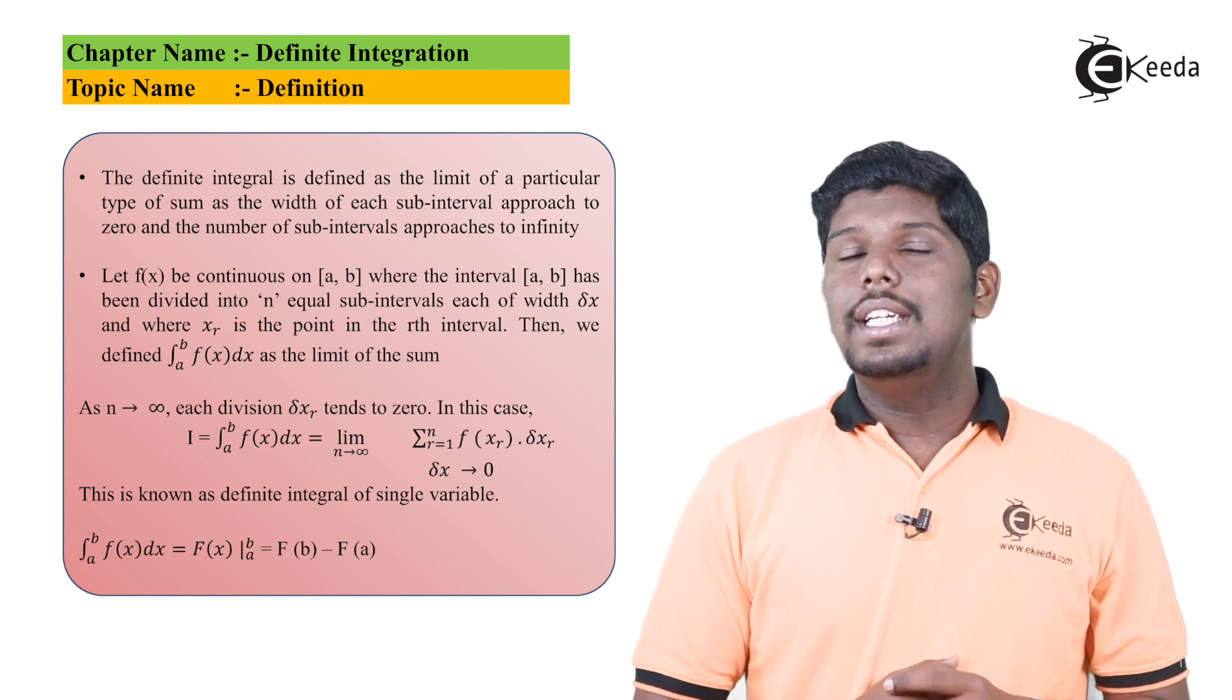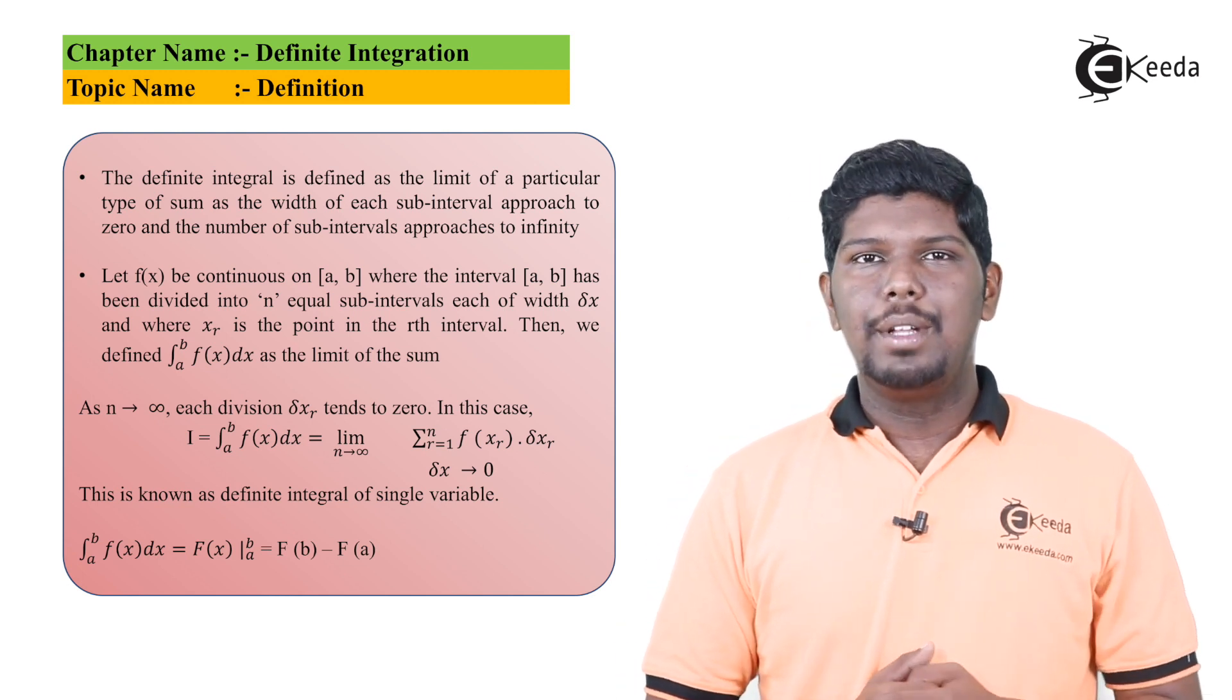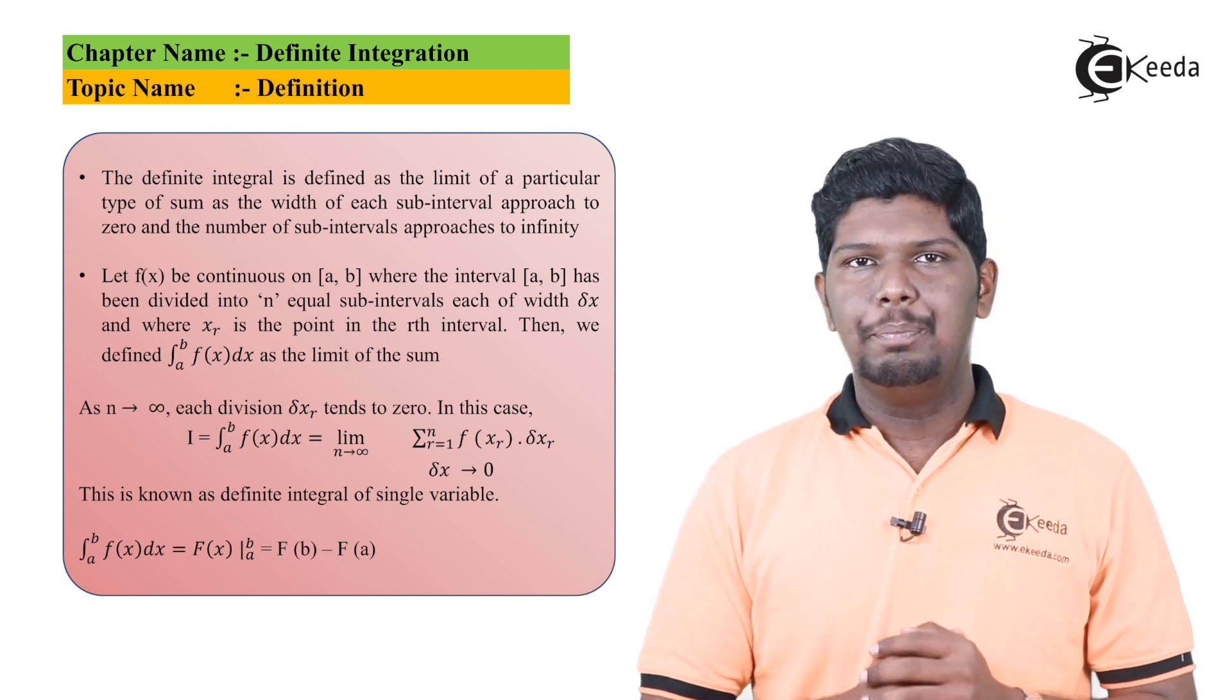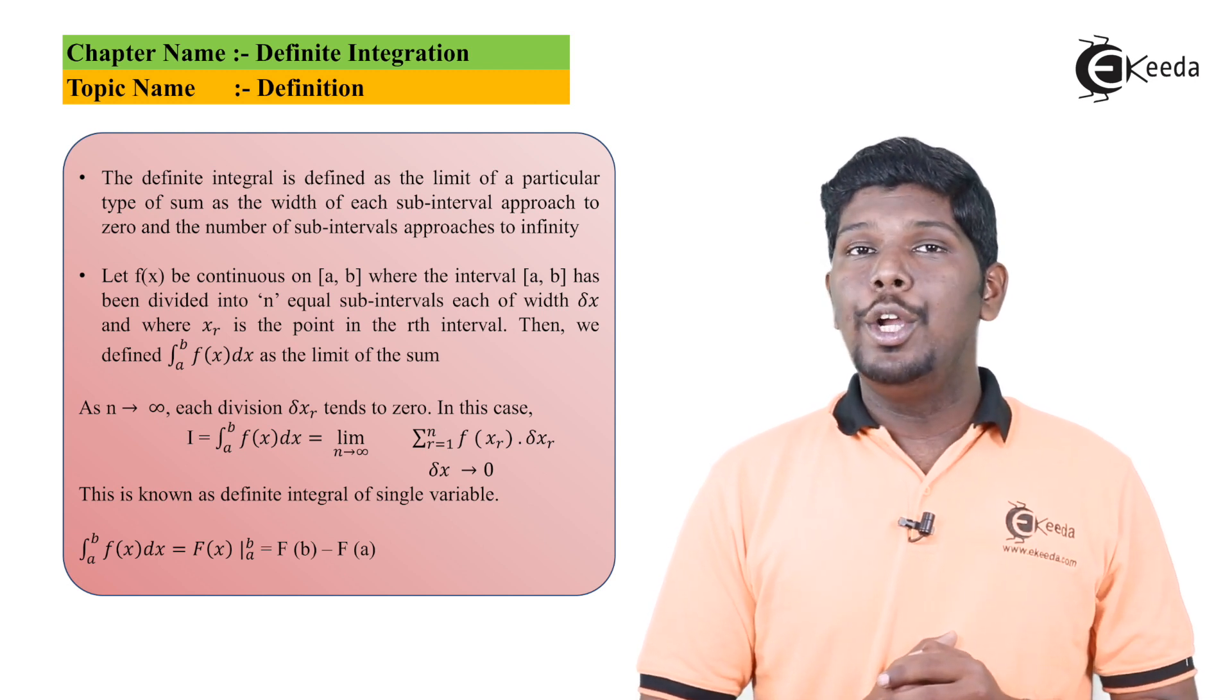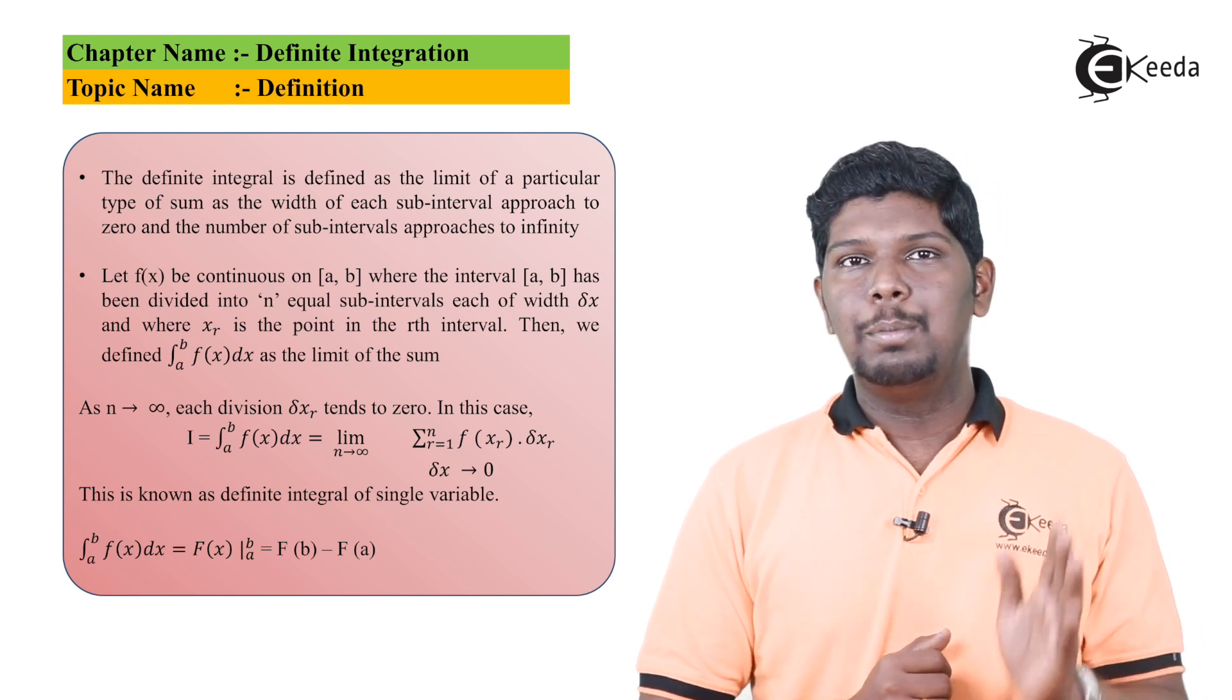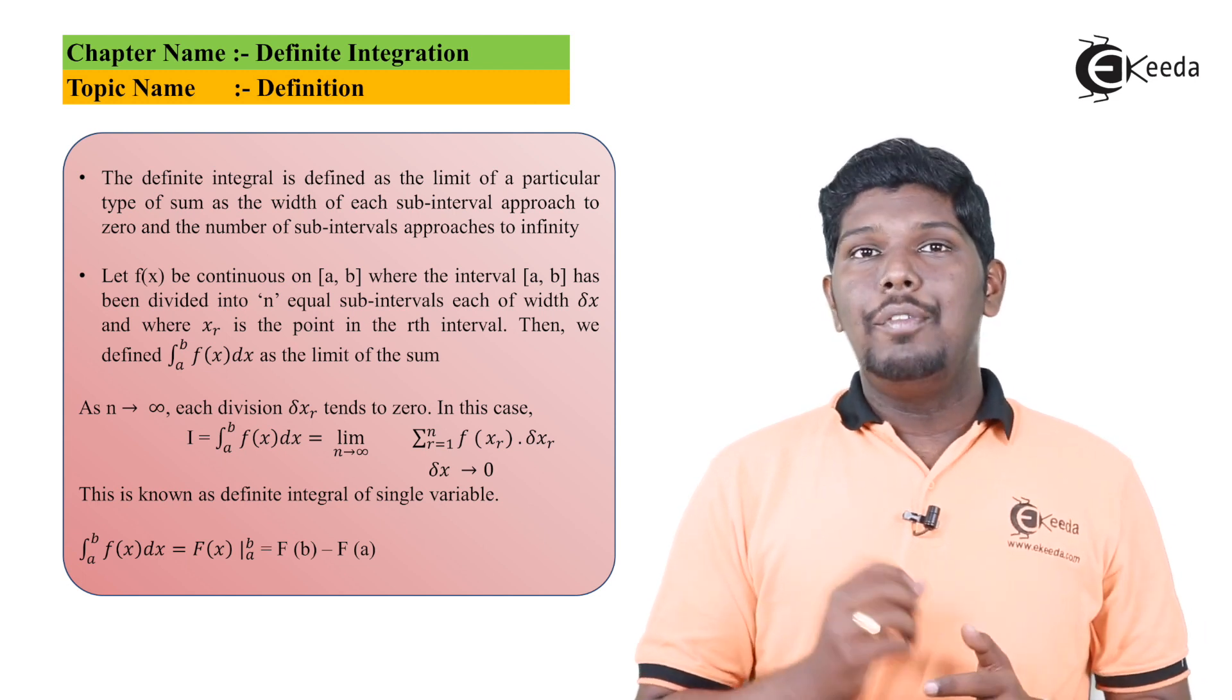So what are the changes that we are going to see in this new chapter? The process that we have done in the previous chapter of integration remains the same, but in the final answer we are going to substitute first x as upper limit and then subtract it by substituting x as lower limit.